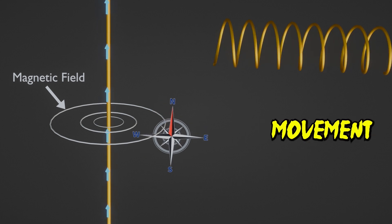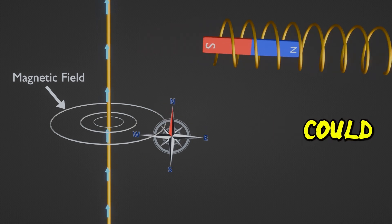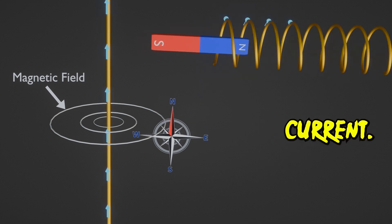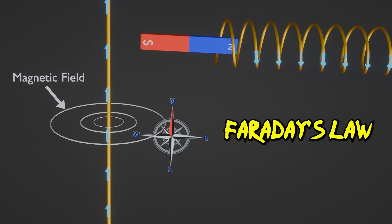Similarly, the movement of a bar magnet across a wire could induce an electric current, a principle now known as Faraday's law.